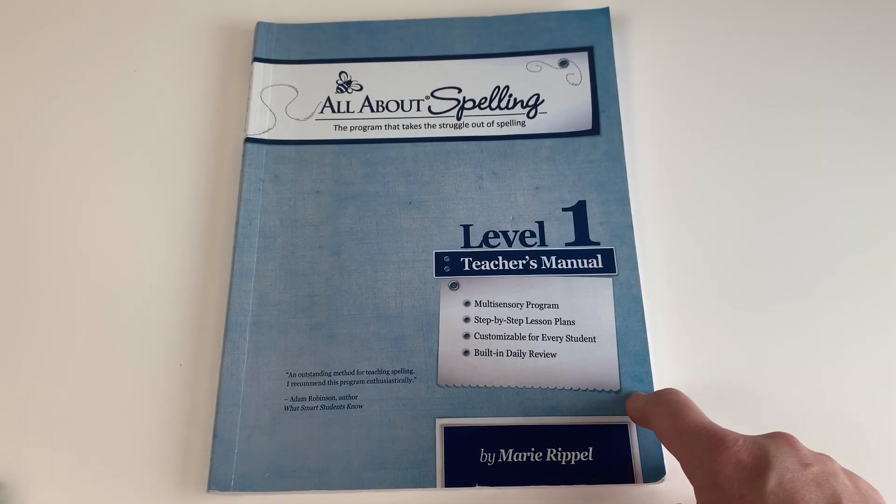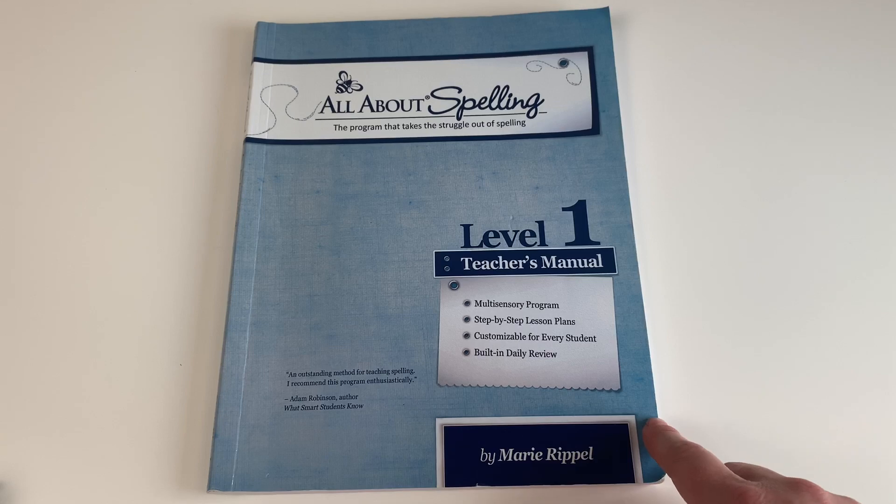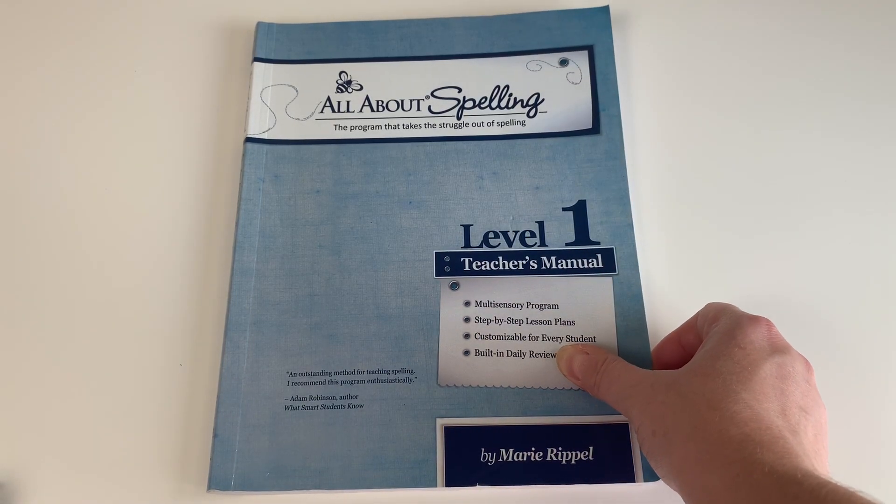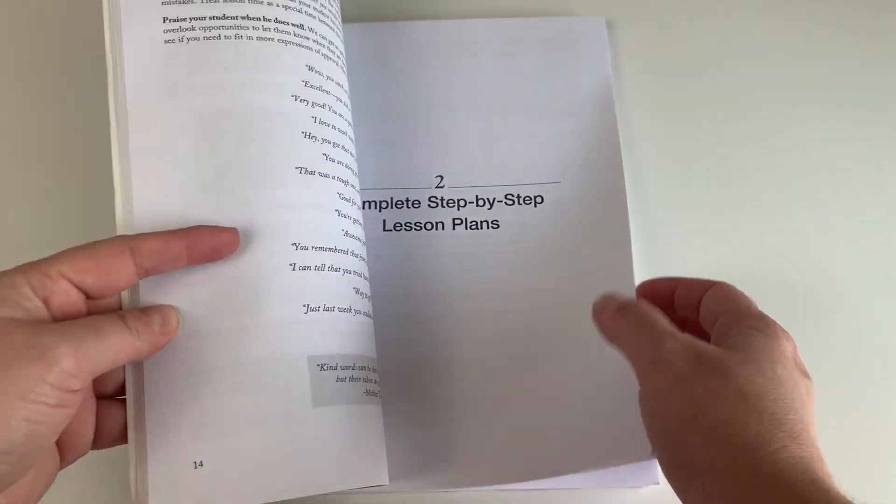So for spelling this year, we decided to try out All About Spelling and we started it this summer and are almost finished with level one. So throughout this school year we will move through level two and possibly level three.